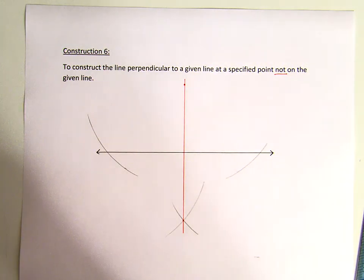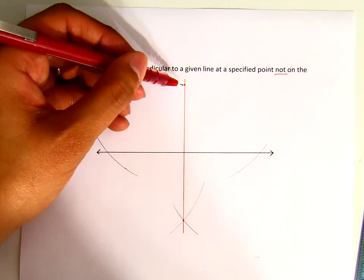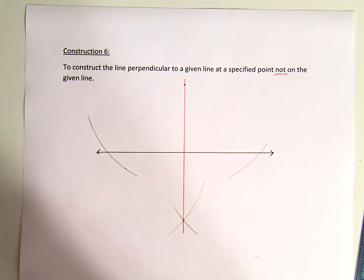This is the line perpendicular to the given line and passing through a point not on the given line. This is Construction 6.